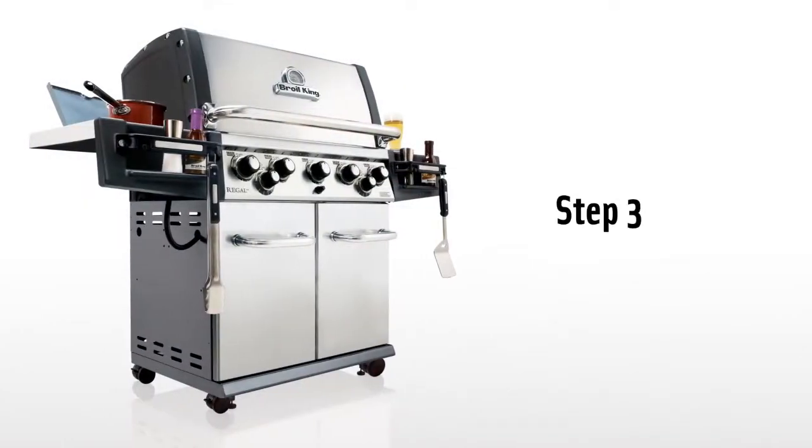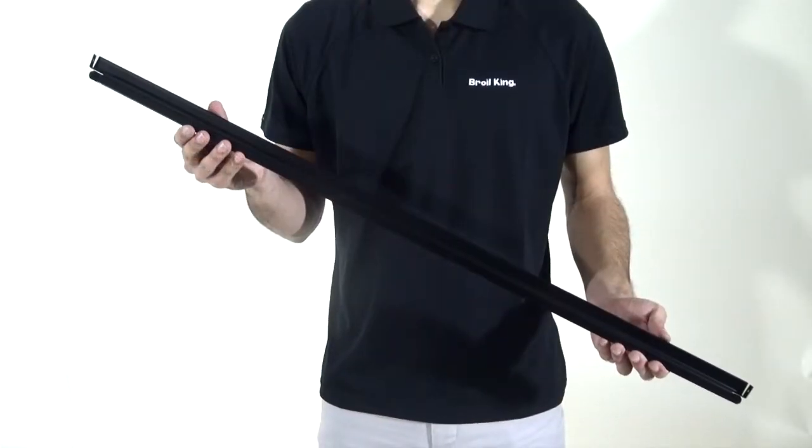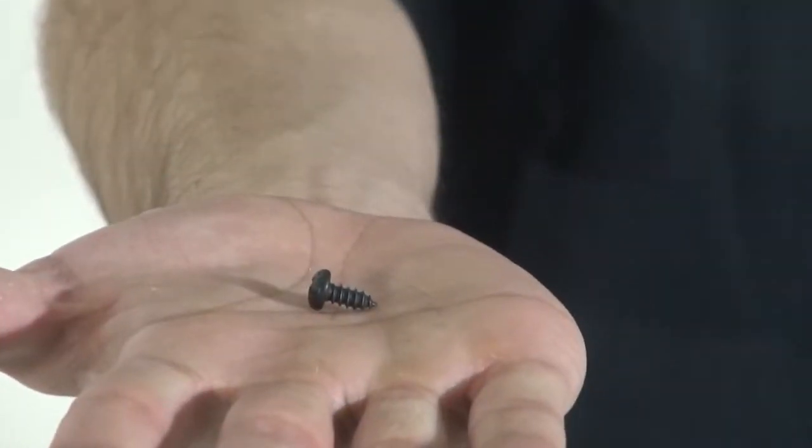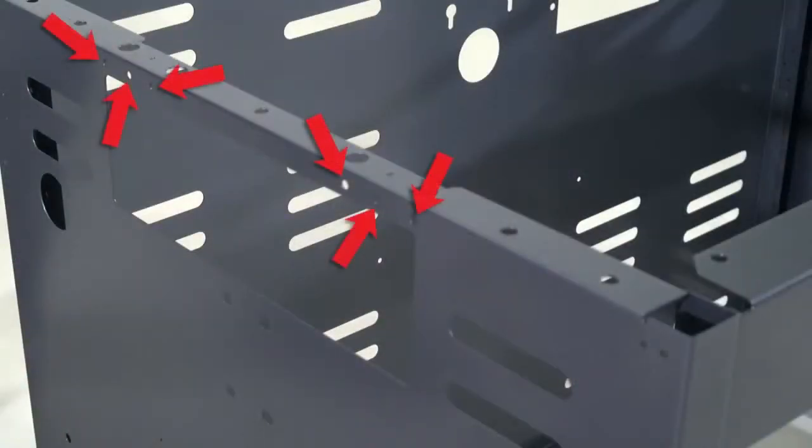Step 3. Install the grease tray rails using four screws. Each cabinet side panel has three holes in two locations. Attach the side panel with a screw into the middle hole only.